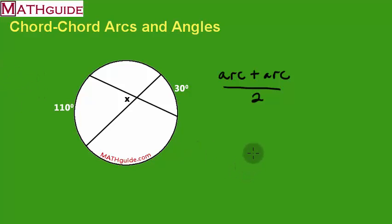Easy enough. So, let's use it. I'm going to take the two arcs. So, I'm going to take 110 plus 30, add them, and divide by 2. So, it looks like I'm getting 140 divided by 2 is 70 degrees.